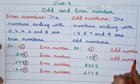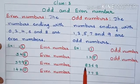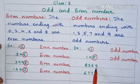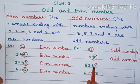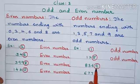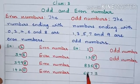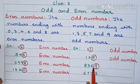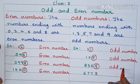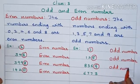The next one: 8,369. See children, the last digit is 9. So 9 is an odd number. So 8,369 is also an odd number.